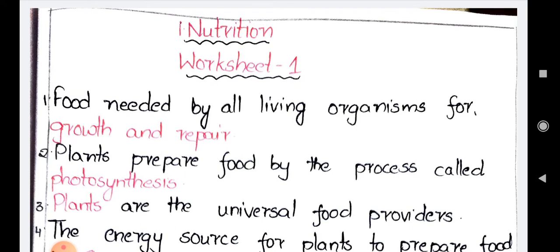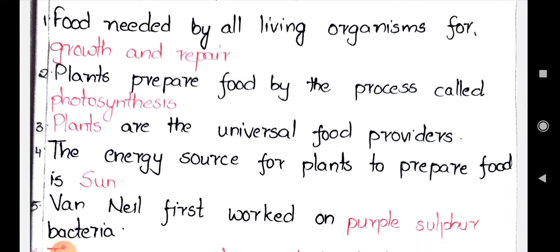The next bit is: blank are the universal food providers. The answer is plants — plants are the universal food providers. Why? Because plants have a specific pigment in their leaves: chlorophyll. Chlorophyll is not present in all living organisms. Only plants and some microorganisms have the green color pigment. Plants are more in number and have a rich amount of chlorophyll. They can prepare food material using sunlight and give it to us, and animals also depend on plants. That's why plants are called the universal food providers.